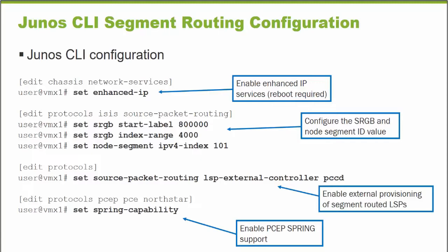Now I also need to define — this is VMX1, the node I'm doing the configuration on — each node in the segment routing domain requires its own node segment ID, its own node SID, and it's unique throughout the domain. Since it's VMX1, I picked a node SID value or node index value of 101. And that's it — I'm done as far as configuring just straight regular segment routing required for Junos platforms to forward.